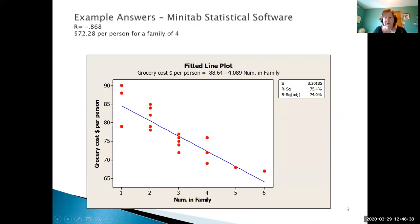Here's the results shown in Minitab for our grocery cost per person. Again notice we have an r, and we can use little r or big r here, it's -0.868. Negative strong relationship, form linear. The fitted line is grocery cost per person, notice the variable name, is 88.64 minus 4.089 times the number in the family.